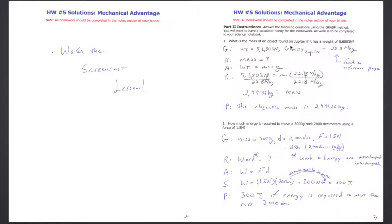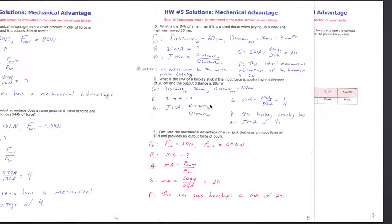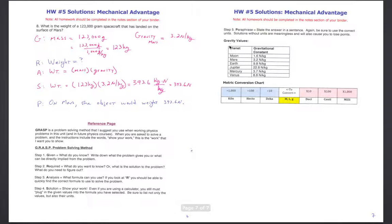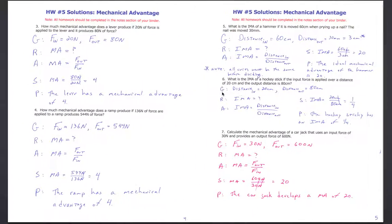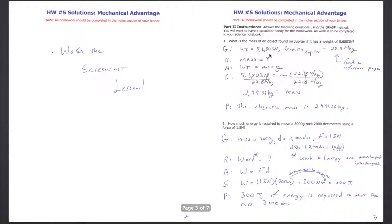You can see here: what is the mass of an object found on Jupiter if it has a weight of 56,803 Newtons? I made a mistake earlier — it should be 56,803 Newtons, and I caught it eventually. For gravity, I don't expect you to look these up on the internet; the reference page in these documents provides all the gravitational constants for this set of planets, so we plug that in.